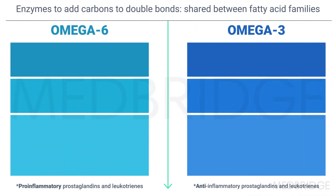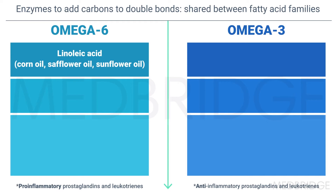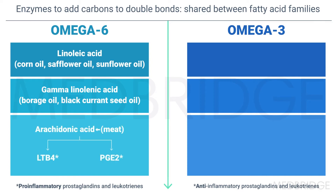When we look at the omega-6 fatty acids, what do they include? Linoleic acid — that is corn oil, safflower oil, sunflower oil, or basically the vegetable oils that you find in the grocery store. It also includes gamma-linoleic acid, which is borage oil or what we call black currant seed oil. And then the other is arachidonic acid, which primarily is derived from meat.